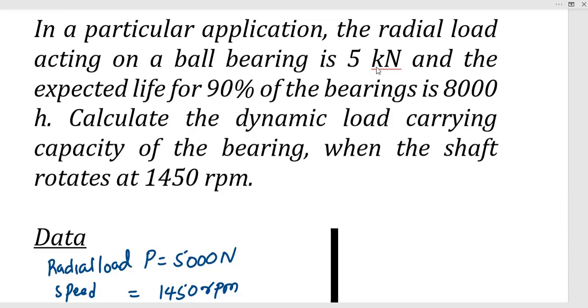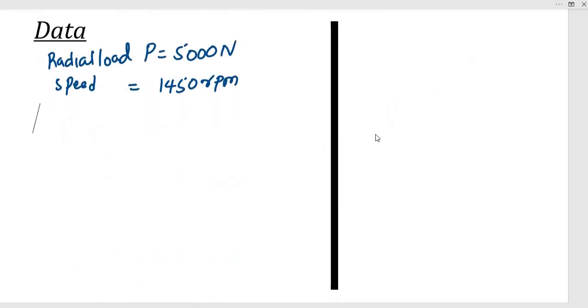So let us look at the data that is provided to us. The radial load, which we are calling P, is 5 kilonewtons, which is 5000 newtons. The speed is 1450 rpm or revolutions per minute.